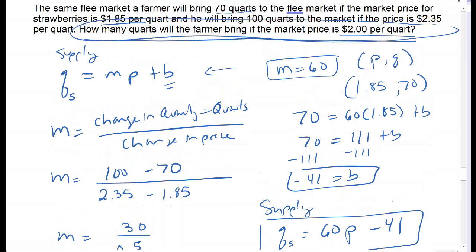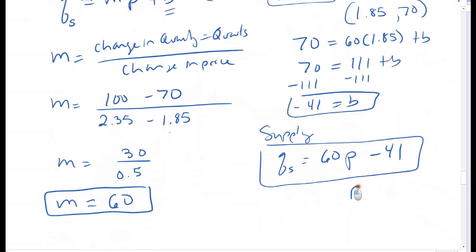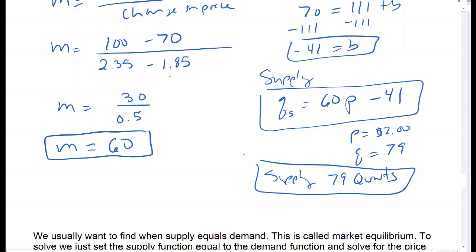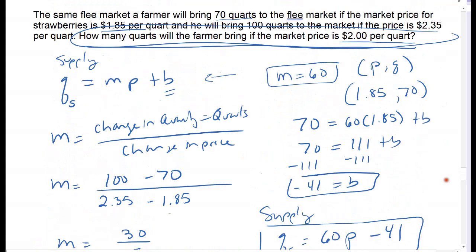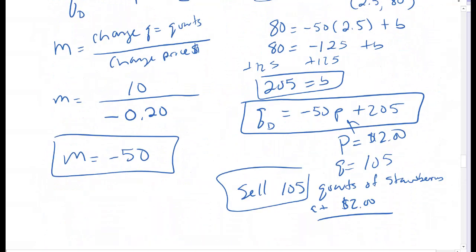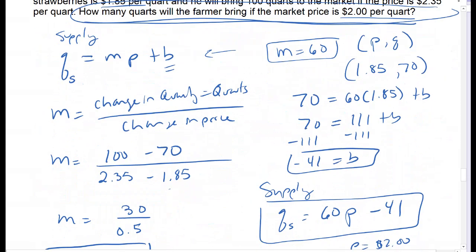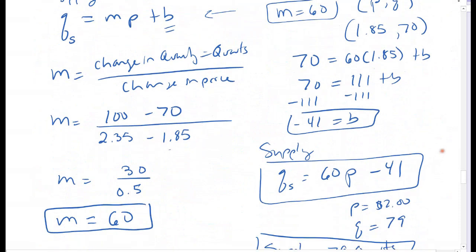Now I'll use my supply equation. How many quarts will the farmer supply if the price is $2? Plug $2 into the equation: 60 times 2 minus 41 equals 79. So he will supply 79 quarts. Based on my previous answer of 105 quarts demanded, he should sell all of them. The demand at $2 is slightly more than supply at 79, so there will be people who leave the market without strawberries because demand won't be met.